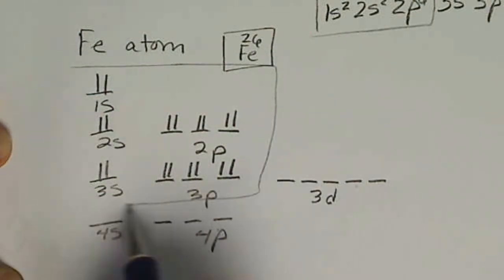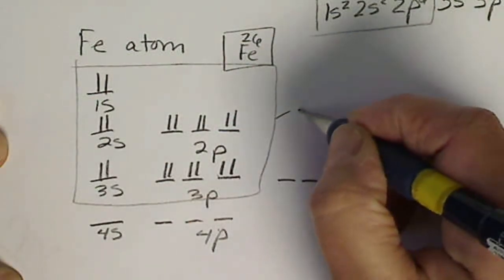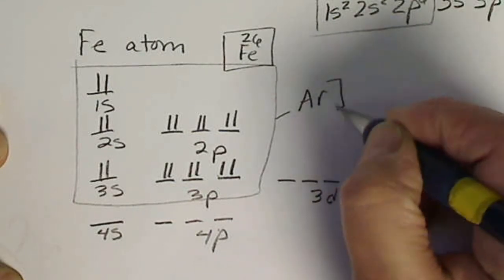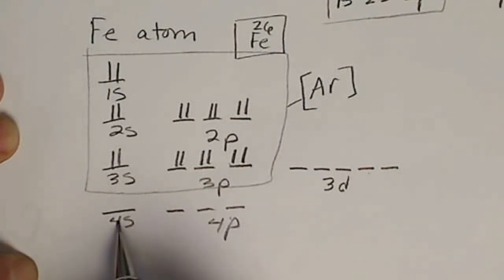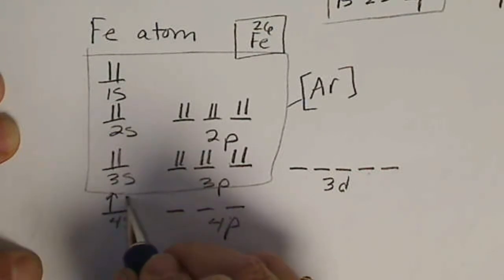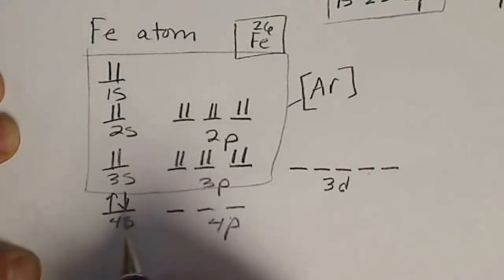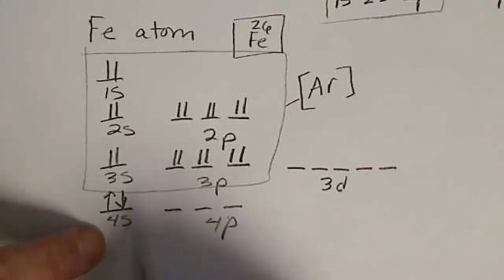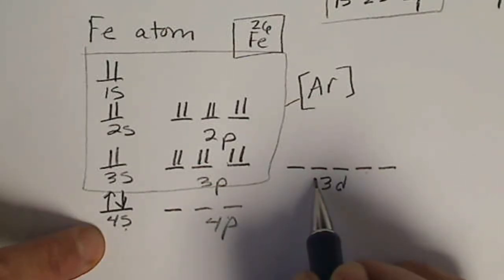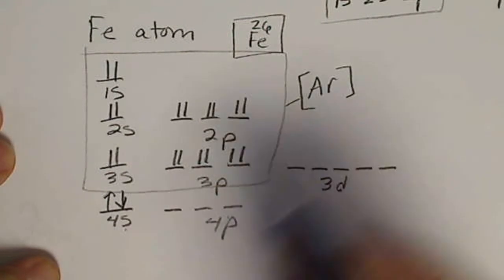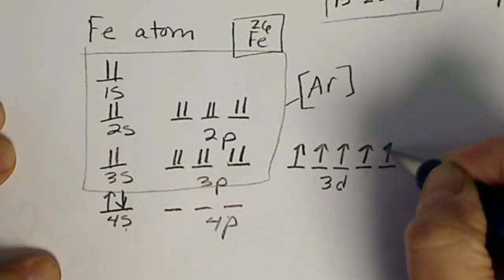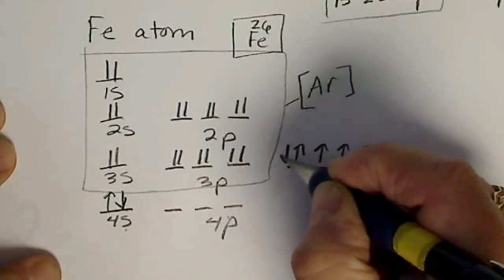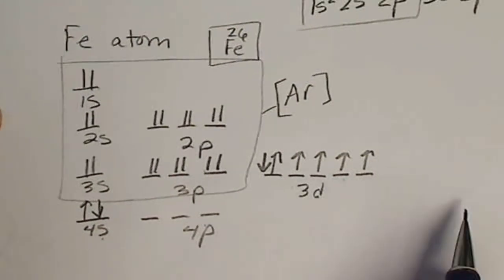This filled s and p level is the same number of electrons as argon. Once we fill the 3p, we're not going to fill the 3d until we fill the 4s. That's an energy concern - the 4s orbital is lower in energy than the 3d. So there's 20, then 21, 22, 23, 24, 25, and 26 electrons.